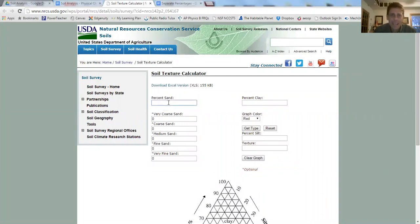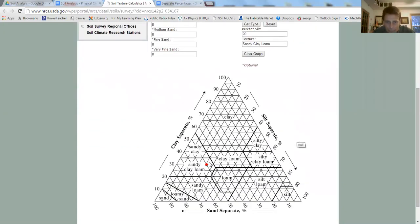So the percent sand that we had, we had 51% sand, and then the clay, we had 29%. And that's all you need. You just need two values there. We can do get type. You can see it gives me the silt, which was 20, which is what we had. And it tells me it's sandy clay loam. If I go down into the texture triangle, you can see that it had pretty much the same point that we had.